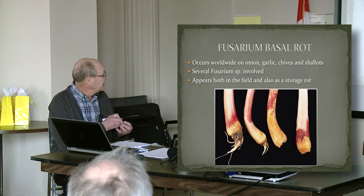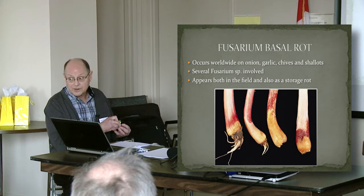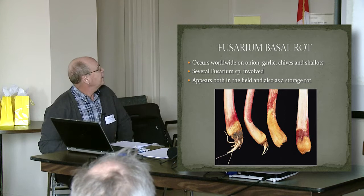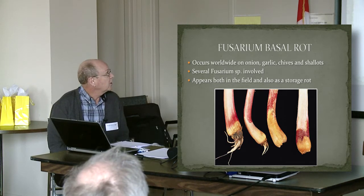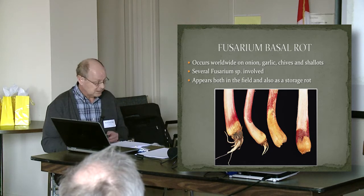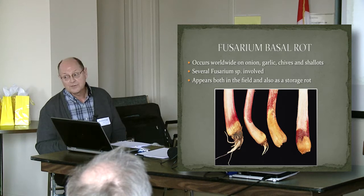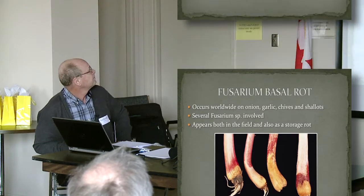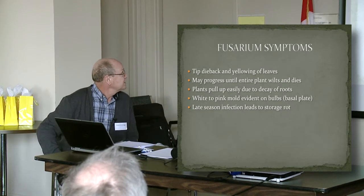This one actually has fusarium basal rot but also a gray mold, which is Petratus — so that one's got a double infection. It occurs worldwide on onion, garlic, chives, and shallots, and there are more than one fusarium species involved. It does occur both in the field and as a storage rot.